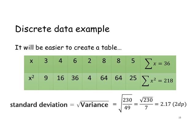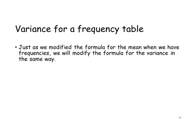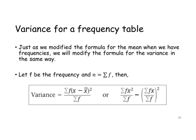So that's variance and standard deviation for discrete data. Let's have a look at variance for a frequency table. When we calculated the mean of data, we modified the formula for frequencies, and just as we did that for the mean, we will do the same for variance and standard deviation. Let f be the frequency and n be the sum of the frequencies. Then our formula becomes: variance equals the sum of f times x minus x-bar all squared, divided by the sum of f.